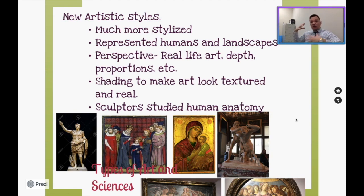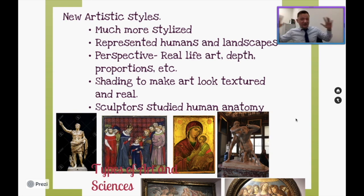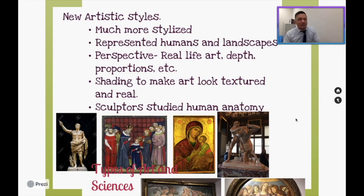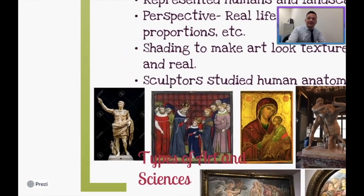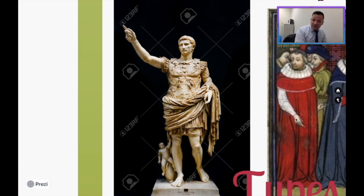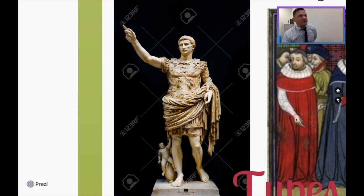Renaissance art will represent humans and landscapes in both a two-dimensional and three-dimensional feel with vanishing points and multiple layers. Perspective is going to be used — depth, proportions, and shading — to make the art look more textured and real. Sculptors are also going to study human anatomy, like Leonardo da Vinci's Vitruvian Man, to figure out how to get the arms the right length by measuring the body itself. That's all mirroring the ideals of the ancient Romans. That right there is an ancient Roman sculpture — Augustus at Ponte Verde — in the Vatican Museum, made close to his death in 17 BC.